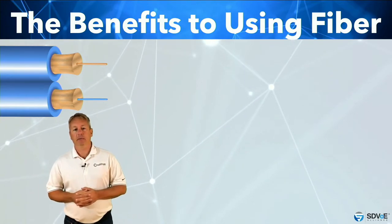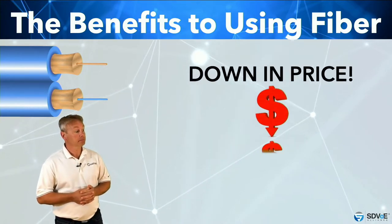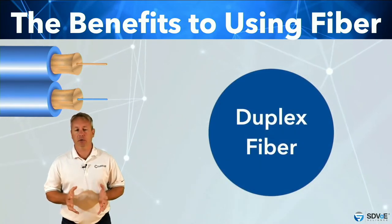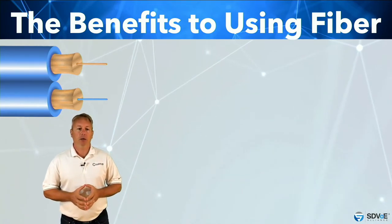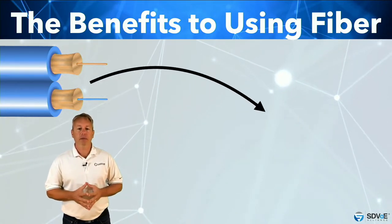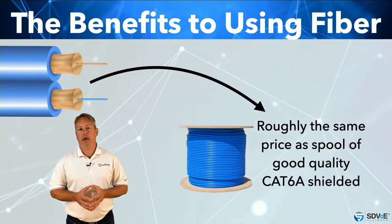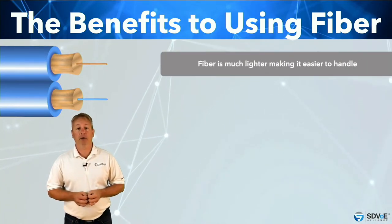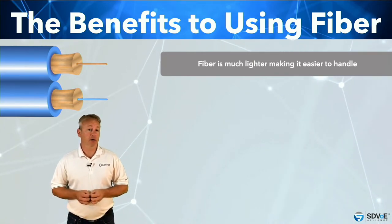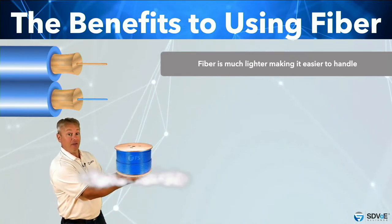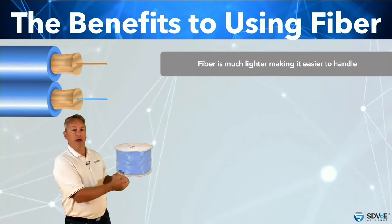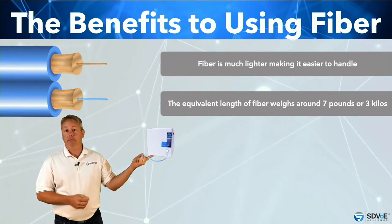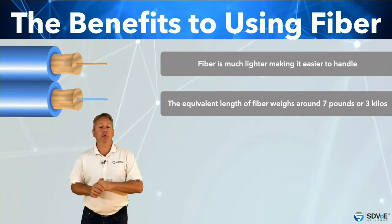Fiber and the components that connect to it have come way down in price. A thousand feet or 305 meters of duplex fiber is now roughly the same price as a spool of good quality Cat 6A shielded. Fiber is also considerably lighter — 1,000 feet of shielded Cat 6A is approximately 50 pounds or 23 kilos with a diameter of around 8mm. The equivalent length of fiber weighs around 7 pounds or just 3 kilograms and is only 3mm in diameter.